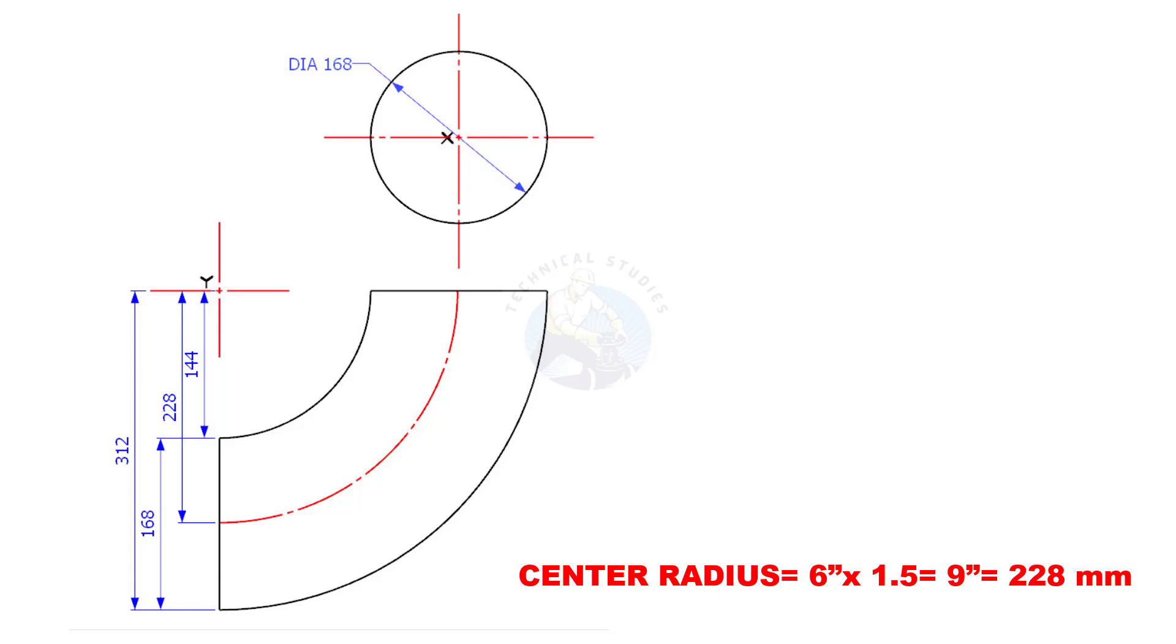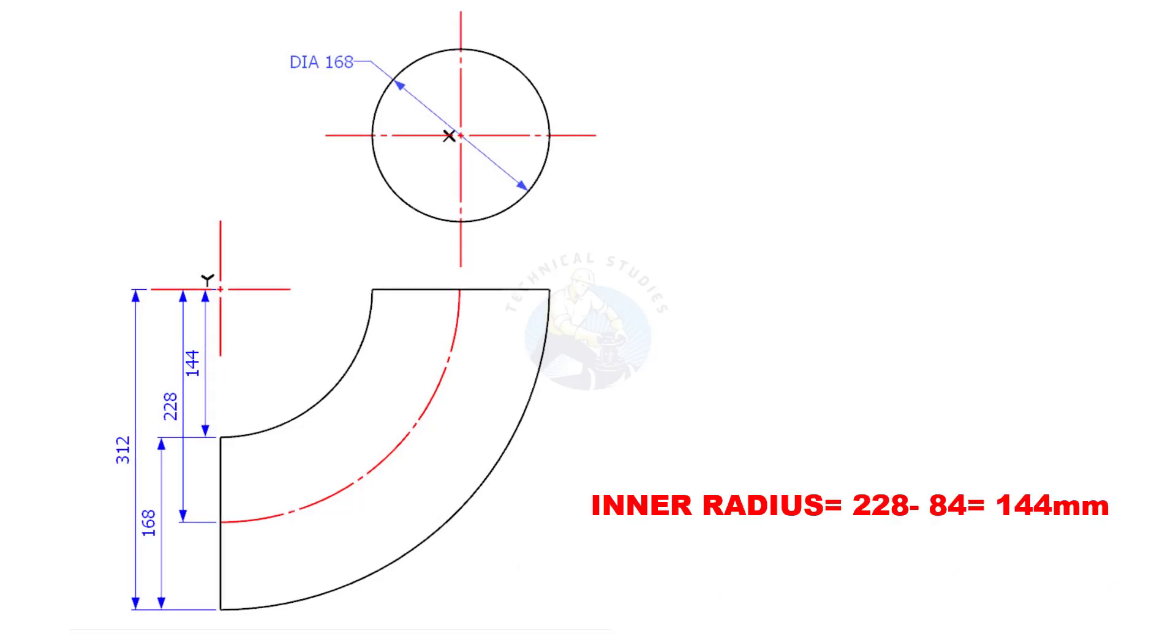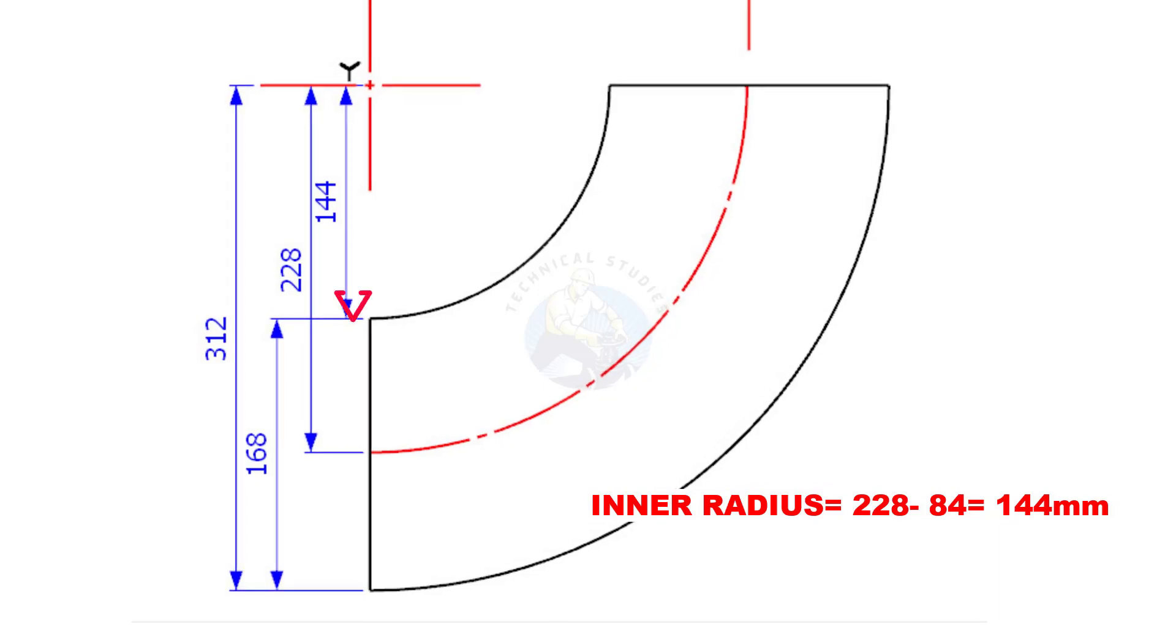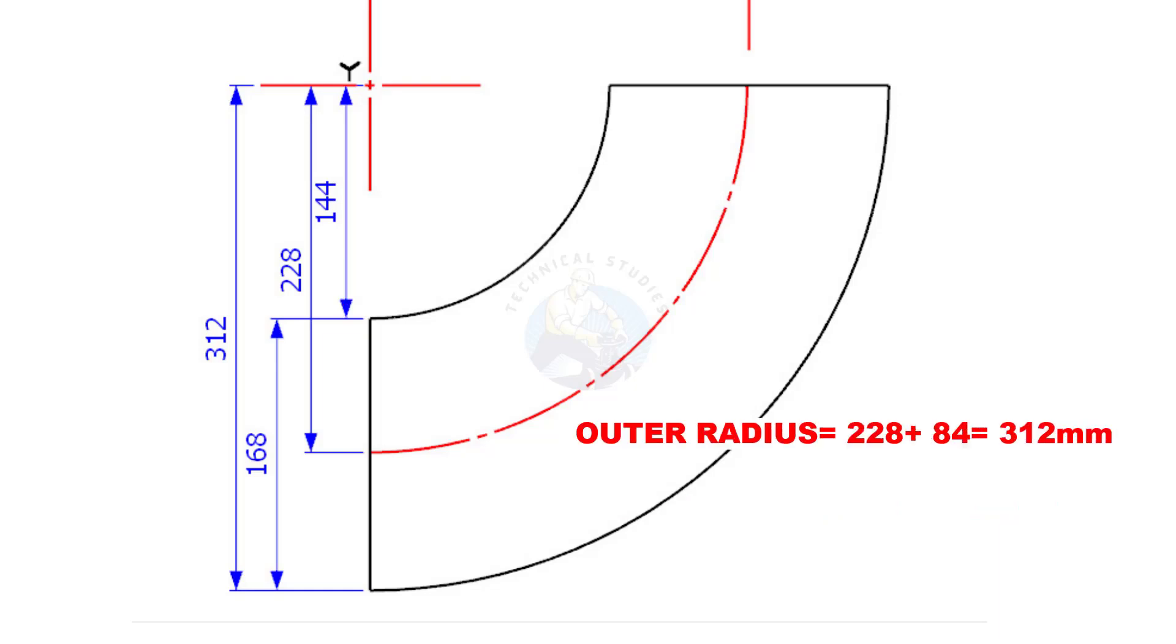Convert 9 inches to millimeters. So the elbow center is roughly 228 millimeters. To find the inner radius, subtract half the diameter of the pipe, that is 84 millimeters, from the center radius. Outer radius is 228 plus 84 equals 312 millimeters.